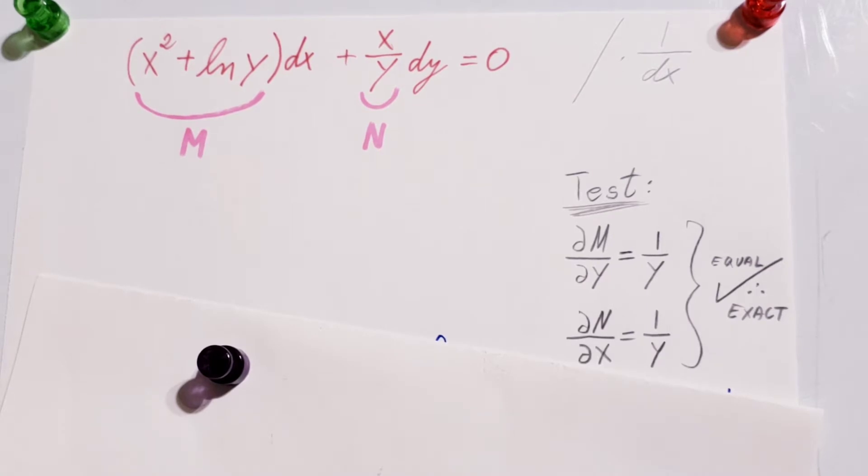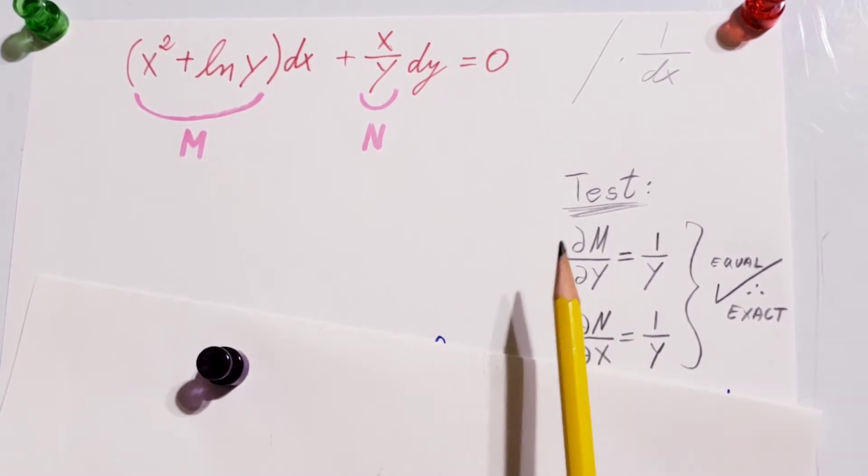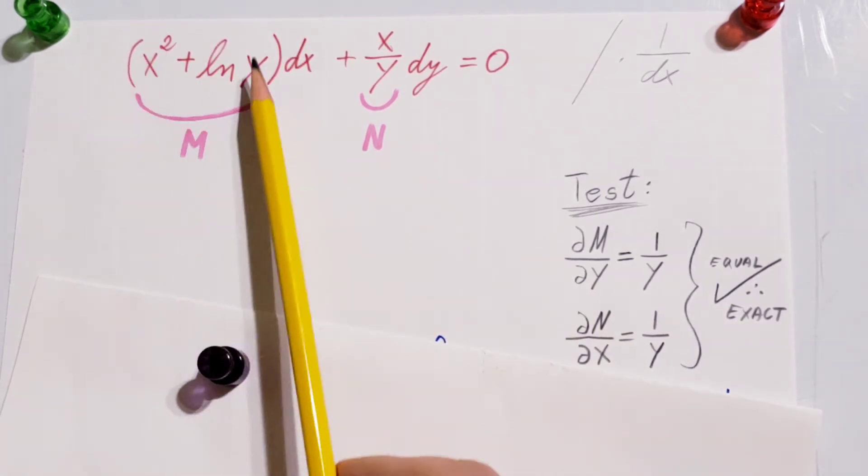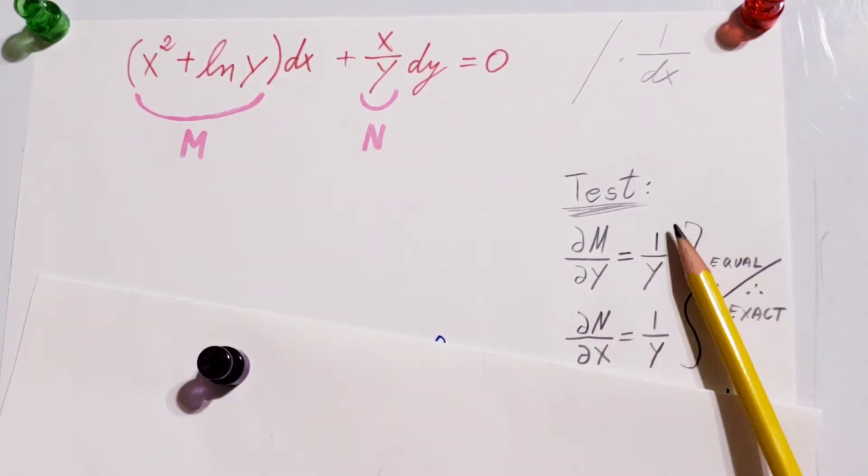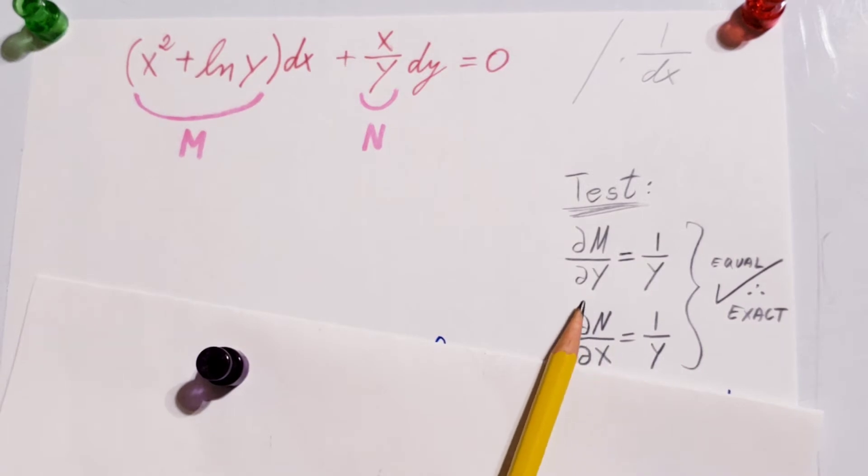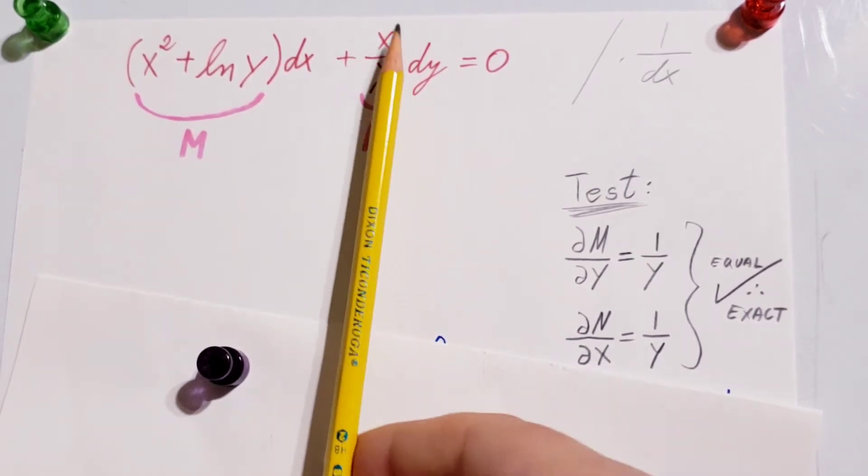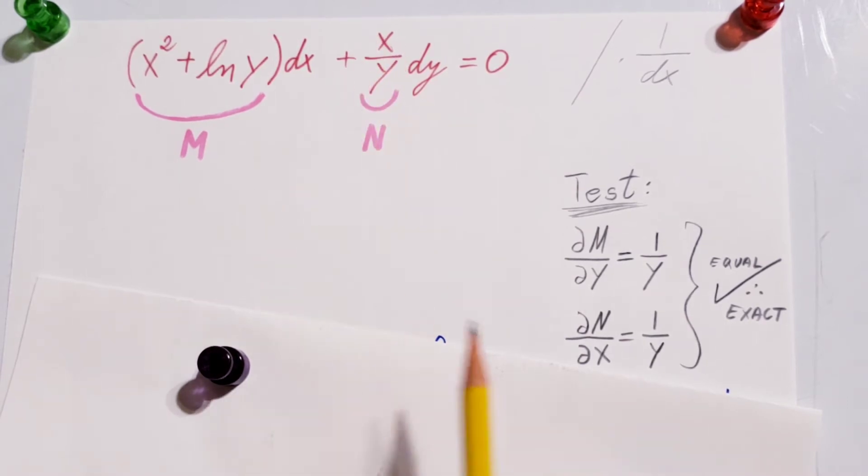Now, before we actually get started with this method, we have to perform the test, right? So, take a partial derivative with respect to y of the part M, and that will give us 1 over y. We're going to take a partial derivative with respect to x of the term N, and that also gives us 1 over y. Since these two are equal, we conclude that we are able to solve this problem by the exact method.